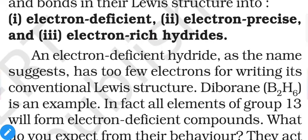If a molecule has exactly eight electrons in its outermost orbitals and all electrons are used in bond formation, it is called an electron precise compound. If a molecule has eight electrons in its outermost orbits but not all electrons are used in bond formation — meaning some electrons are present as non-bonding electron pairs (lone pairs) — then it is called an electron rich hydride.